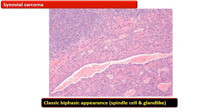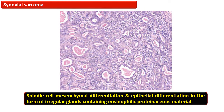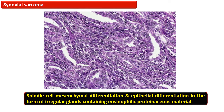This photomicrograph shows the characteristic biphasic appearance of synovial sarcoma with gland-like spaces lined by malignant cells, and in the upper left there is a spindle cell population. Sometimes these glandular spaces exhibit proteinaceous material within the lumen, with abundant spindle cells in the background. The biphasic pattern is characterized by epithelial and mesenchymal sarcoma components, but these terms are descriptive only and do not reflect the histogenesis of these cells.